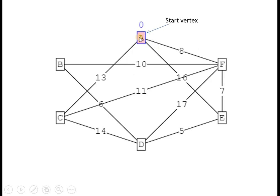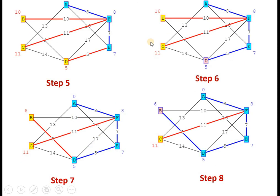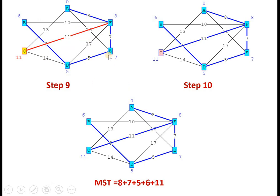Let us check another example. The starting vertex is A. Find all edges starting from vertex A: they are 13, 16 and 8. Since 8 is minimum, the next vertex selected is F. From F, the available edges are 7, 17, 11 and 10, so the minimum cost vertex is B with cost 7. Then the next minimum is 11. You continue visiting all vertices — A, F, C, B, E, D — with minimum cost edges until all vertices are connected.